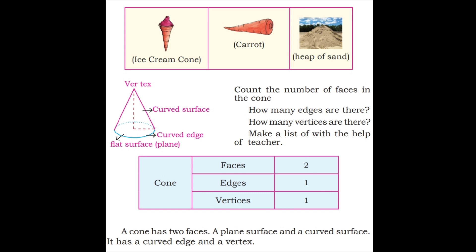Next shape is cone. I am using my daughter's toy — this is an ice cream in the cone shape. This is one vertex where the two lines join. It has two faces: one curved surface and one circular face at the bottom. Edge is one — one curved edge. Examples given: ice cream cone, carrot, heap of sand — these are cone shapes. A cone has two faces, one curved edge, and one vertex.